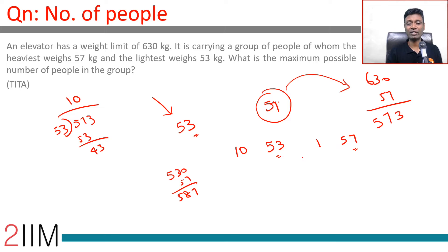By having more people weighing 53 kilograms, what is the maximum possible number of people in the group? So we have 11 people - we could have one of 57 and 10 of 53.